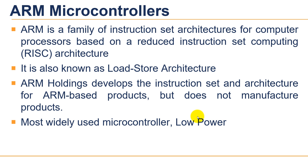Instructions for the ARM Holdings core have 32-bit wide fixed-length instructions, but later versions of the architecture also support a variable-length instruction set that provides both 32-bit and 16-bit wide instructions for improved code density.